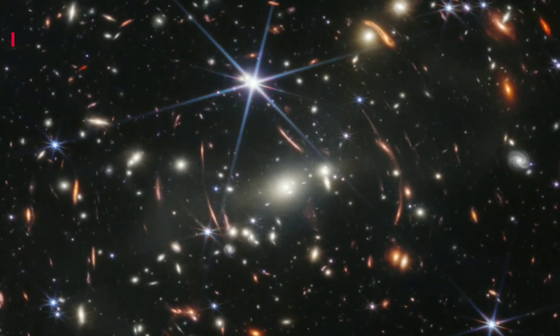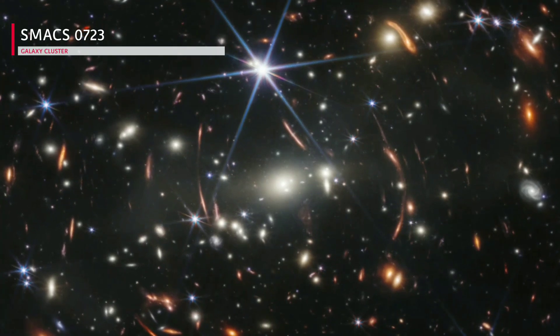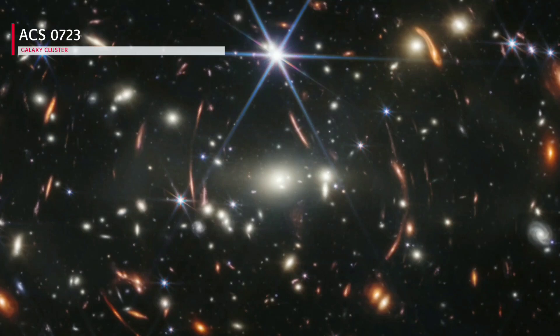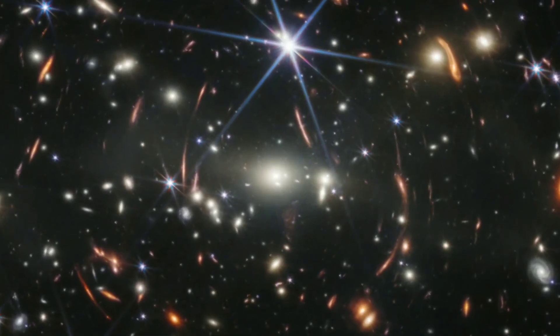It shows us the galaxy cluster named SMAC 0723. It is located around 4.6 billion light-years away from us. So we are literally looking 4.6 billion years back in time. Everything about this image looks clear and perfect.